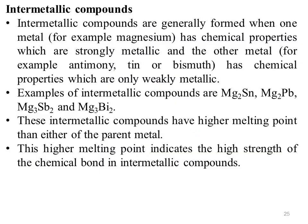What are intermetallic compounds? Intermetallic compounds are generally formed when one metal — for example magnesium — has chemical properties which are strongly metallic, and the other metal — for example antimony, tin, or bismuth — has chemical properties which are only weakly metallic. Examples of intermetallic compounds are magnesium-tin, magnesium-lead, magnesium-antimony, and magnesium bismuth. These intermetallic compounds have higher melting points than either of the parent metals, indicating the high strength of the chemical bonds in intermetallic compounds.